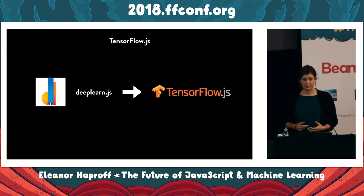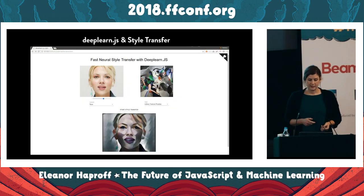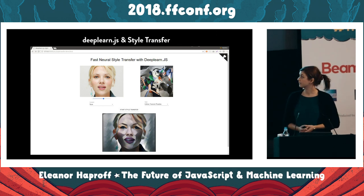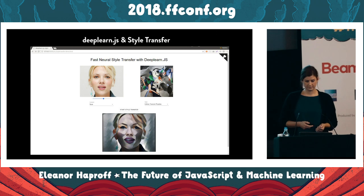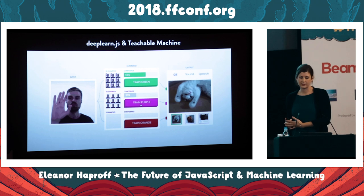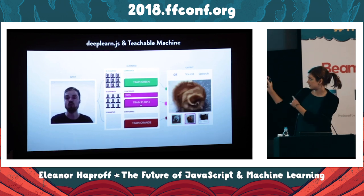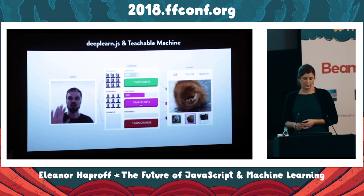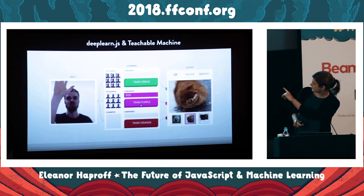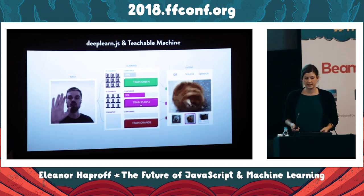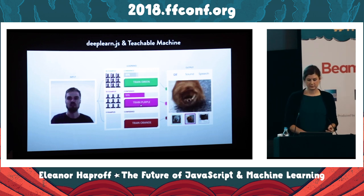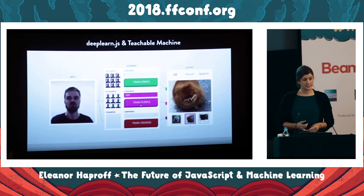DeepLearn.js was only released in August 2017, and in the short time before joining the TensorFlow family, they released a bunch of demos such as style transfer, where you can apply the style of famous artists' work to any photo. Here it's applying the style of Francis Picabia to a photograph of Scarlett Johansson. DeepLearn.js also created Teachable Machine, where you can train a neural network to use your computer's camera with things such as a hand or head movement to trigger the loading of set sounds or images. This demo is really cool and it's on the TensorFlow.js website if you want to have a play.